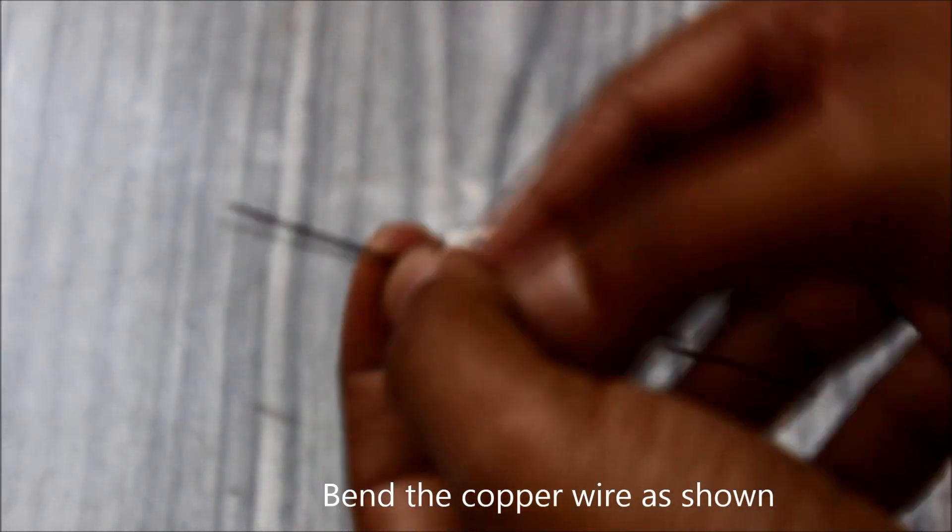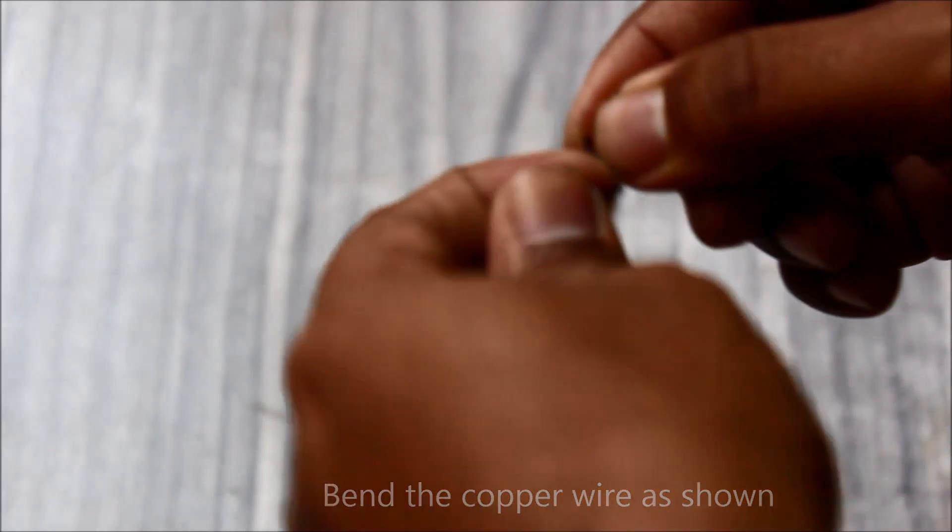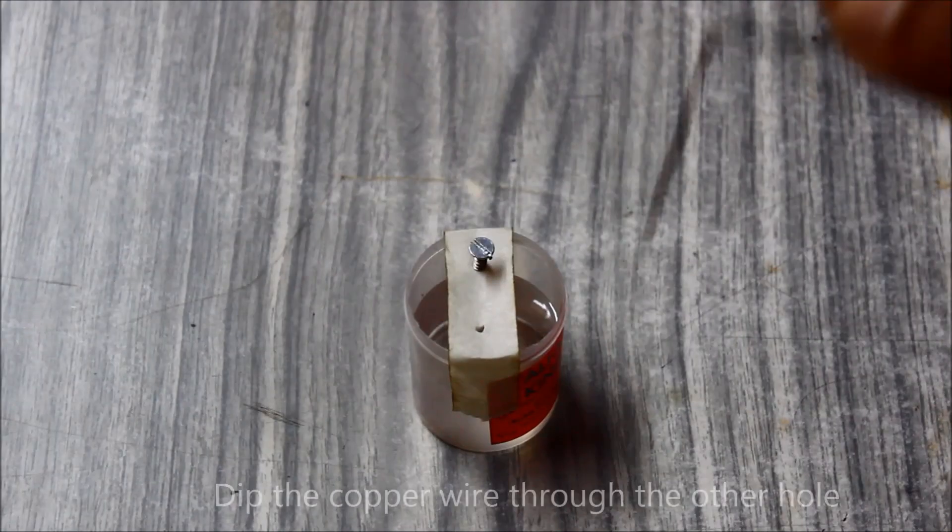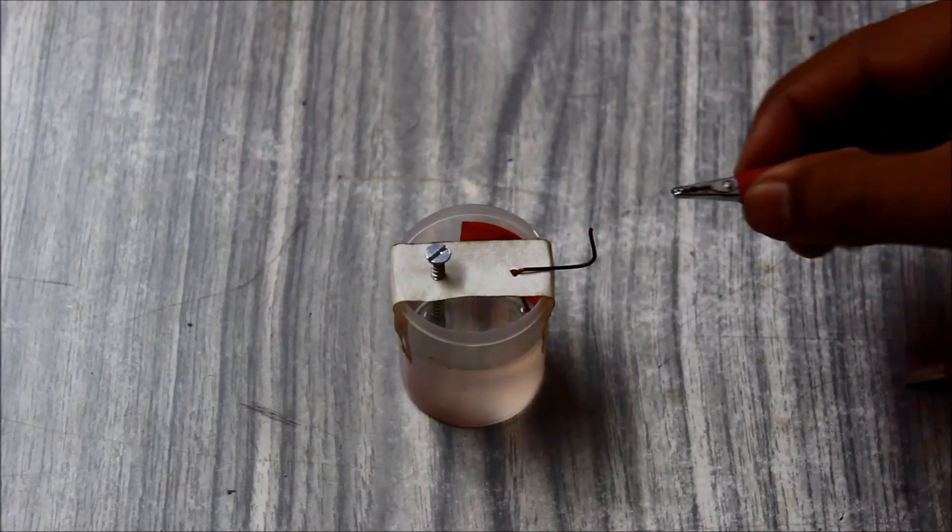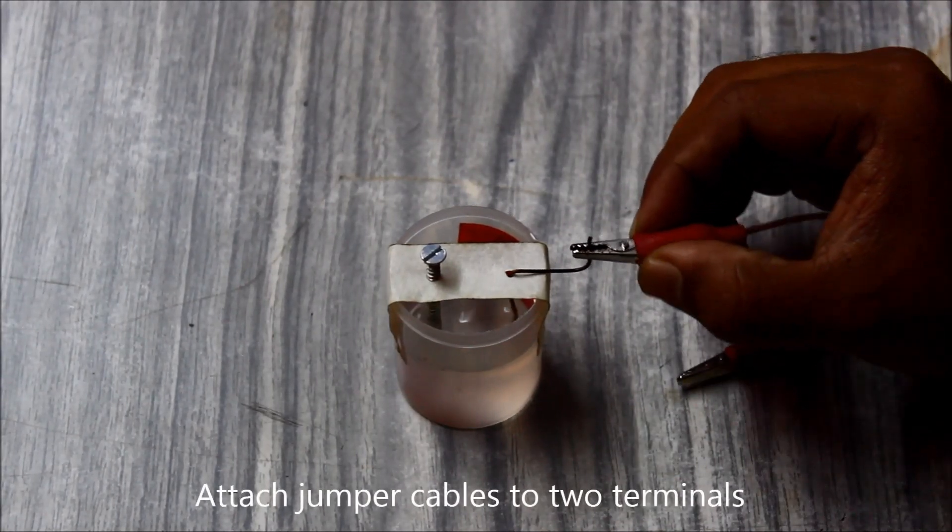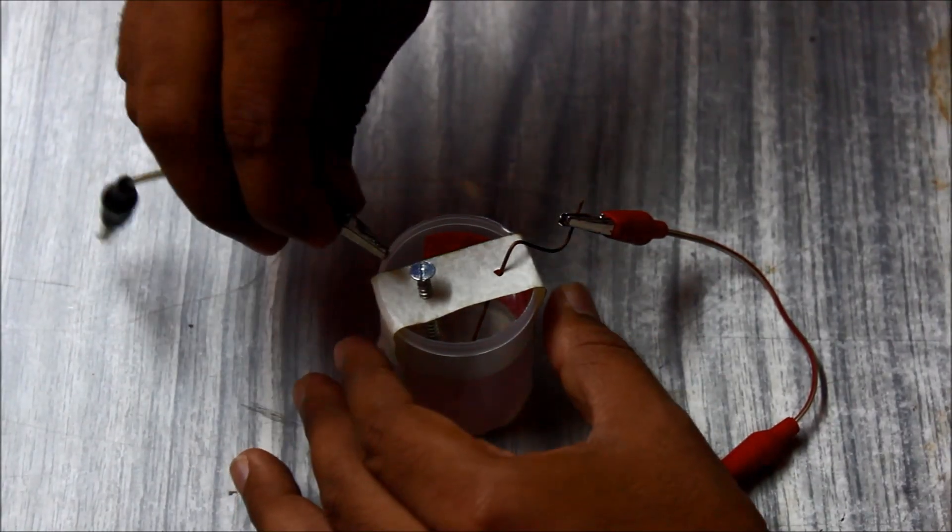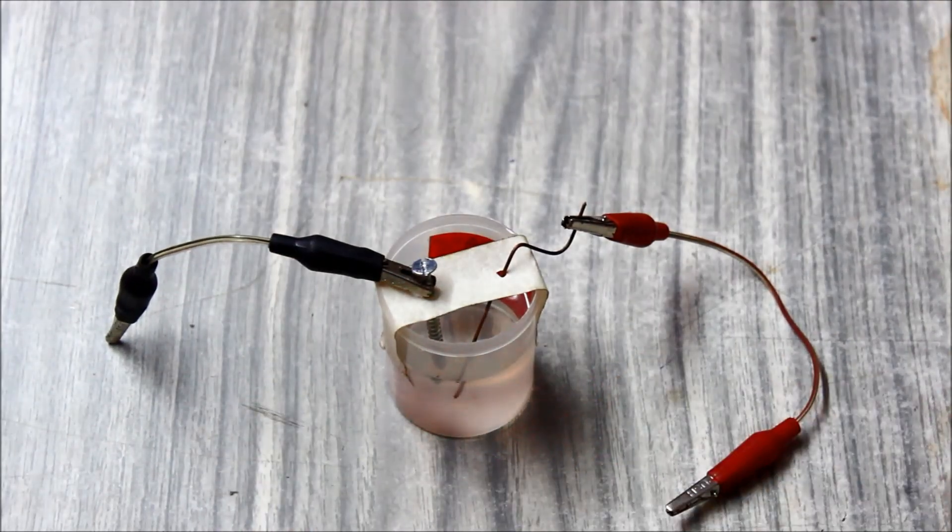The next step is to bend the copper wire as shown. This will prevent it from falling inside, and we'll just dip it into the vinegar acid. Then connect the jumper cables to the terminals. Let's check out the voltage.